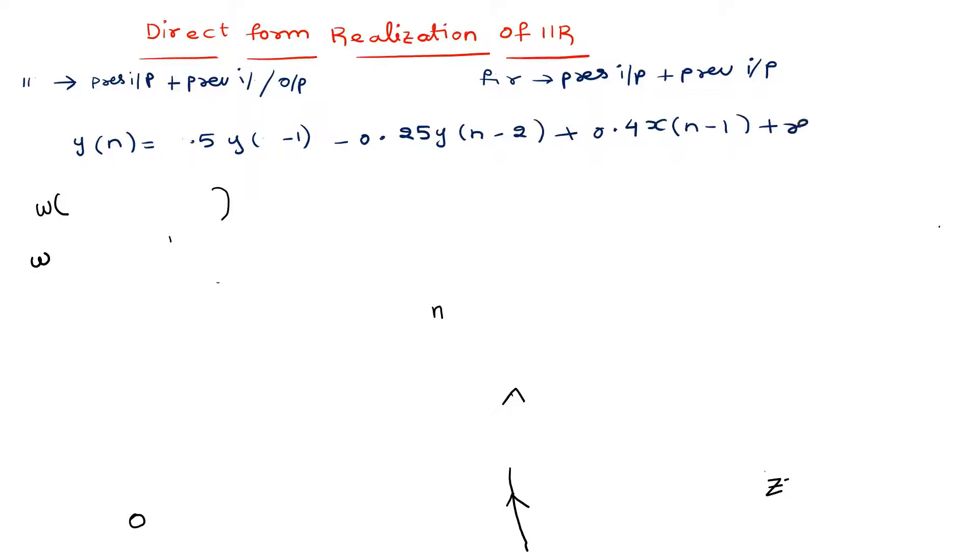This is the equation. If you observe carefully, it depends upon previous output, previous input, and present input. This is the equation for an IIR filter.